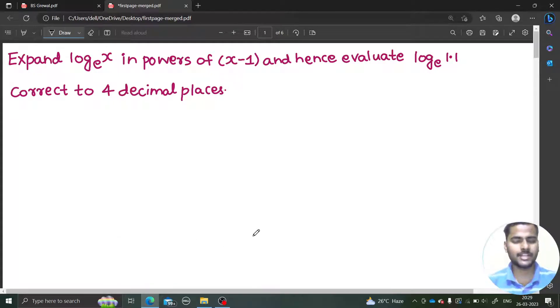Hello everyone, Namaskar, Raj Krishna Dissai. Today we are going to solve one more problem and this time it is based on Taylor series. It is asking expand log x base e in the powers of x minus 1, and hence evaluate the value of log 1.1 to the base e correct to 4 decimal places.